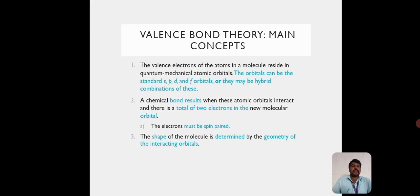The main concepts of Valence Bond Theory: The valence electrons of the atoms in a molecule reside in quantum mechanical atomic orbitals. The orbitals can be the standard s, p, d, and f orbitals, or they may be a combination of these. The chemical bond results when these atomic orbitals interact and there is a total of 2 electrons in the new molecular orbital. The electrons must be spin-paired. The shape of the molecule is determined by the geometry of the interacting orbitals.